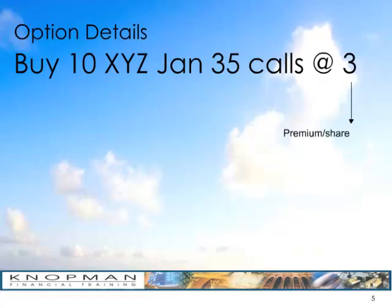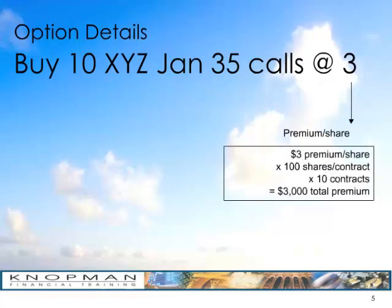This 3 is the premium — it's the cost of the contract on a per share basis. So this total position costs us $3 per share times 100 shares per contract times 10 contracts, for a total of $3,000. Put another way, the premium is the market value of the option.